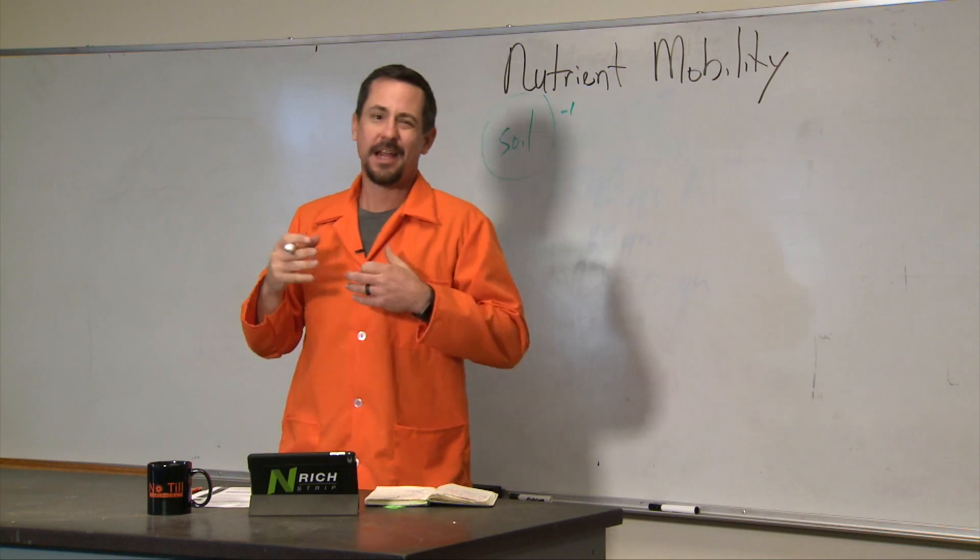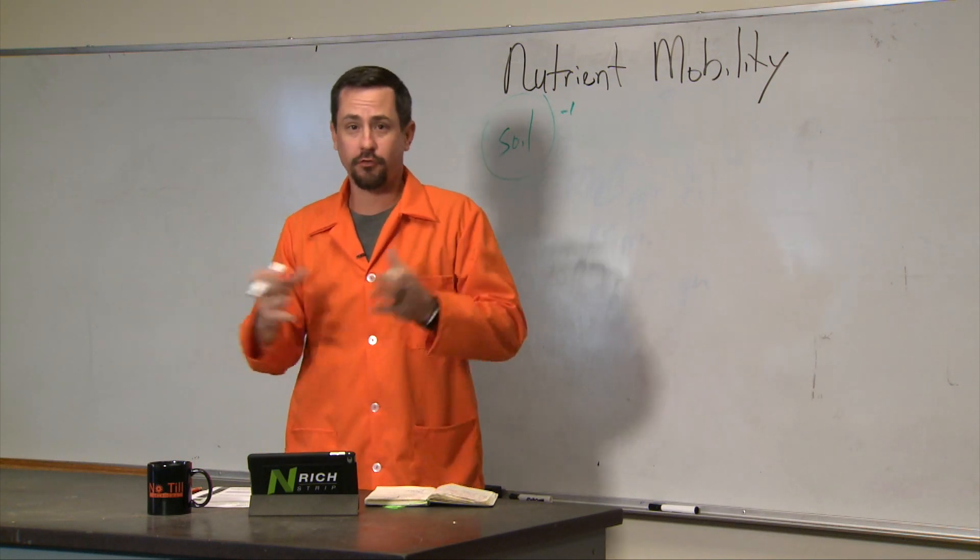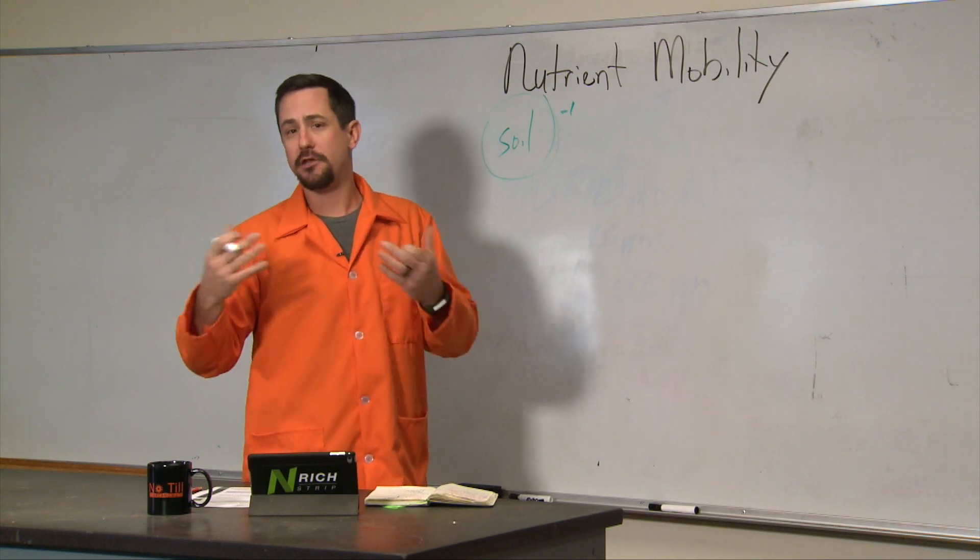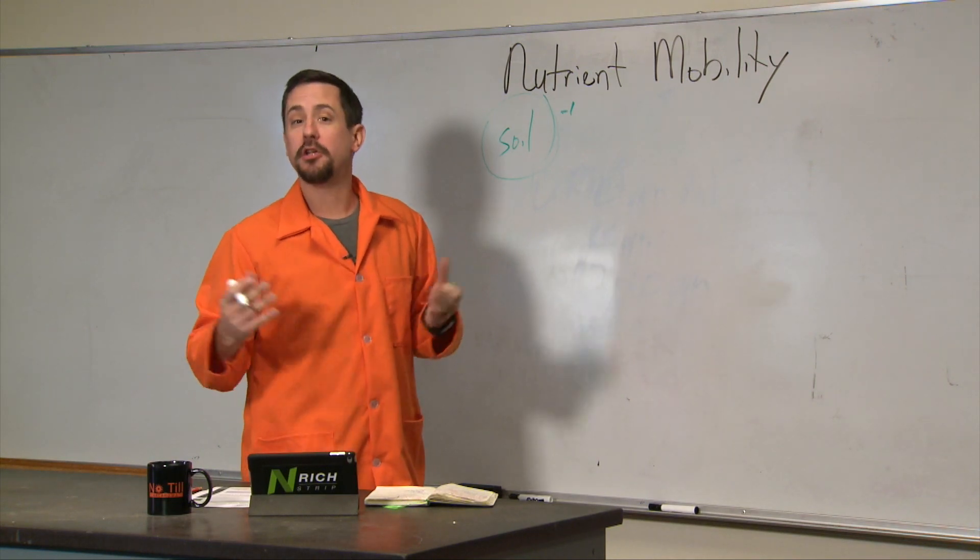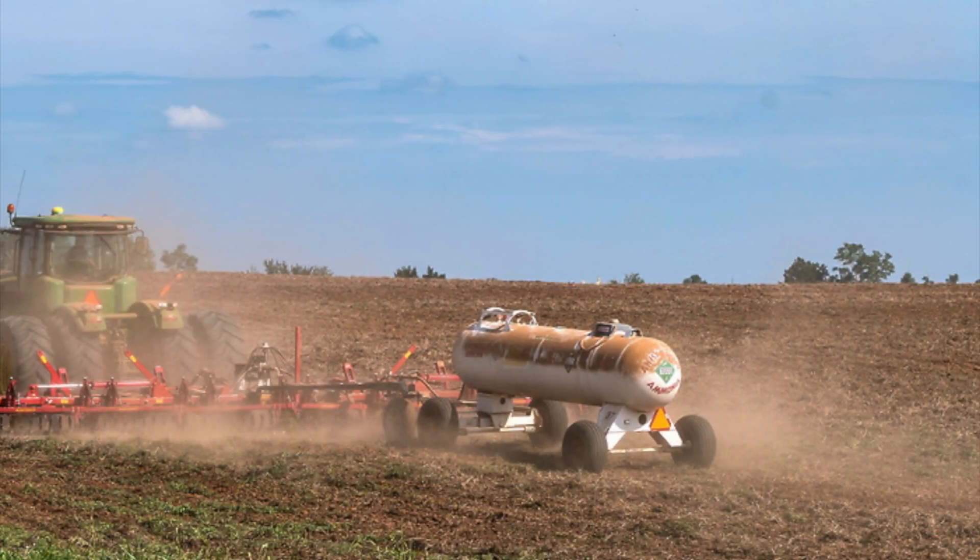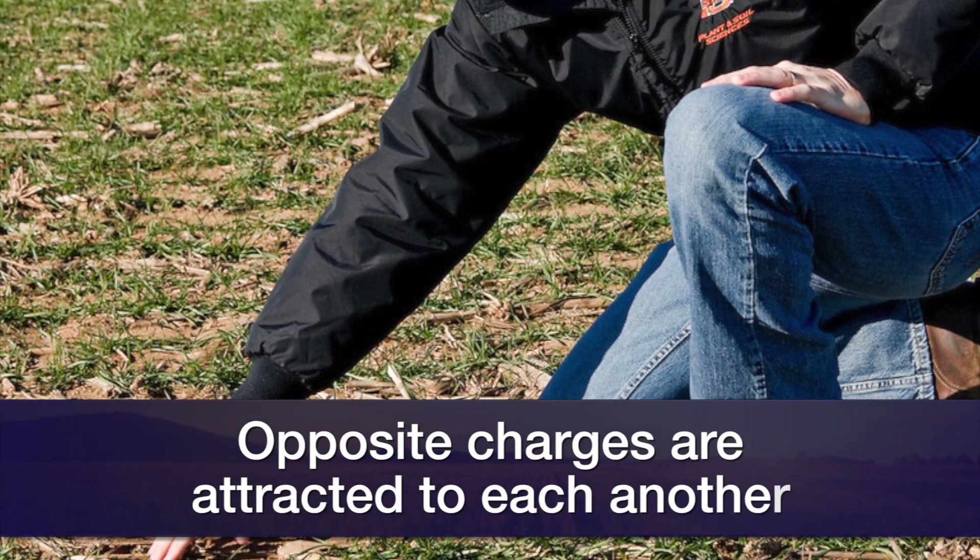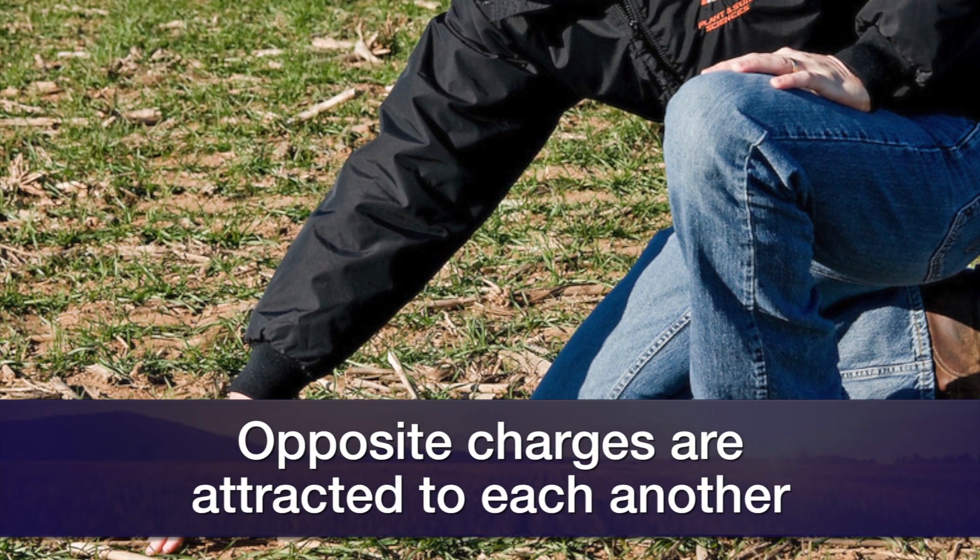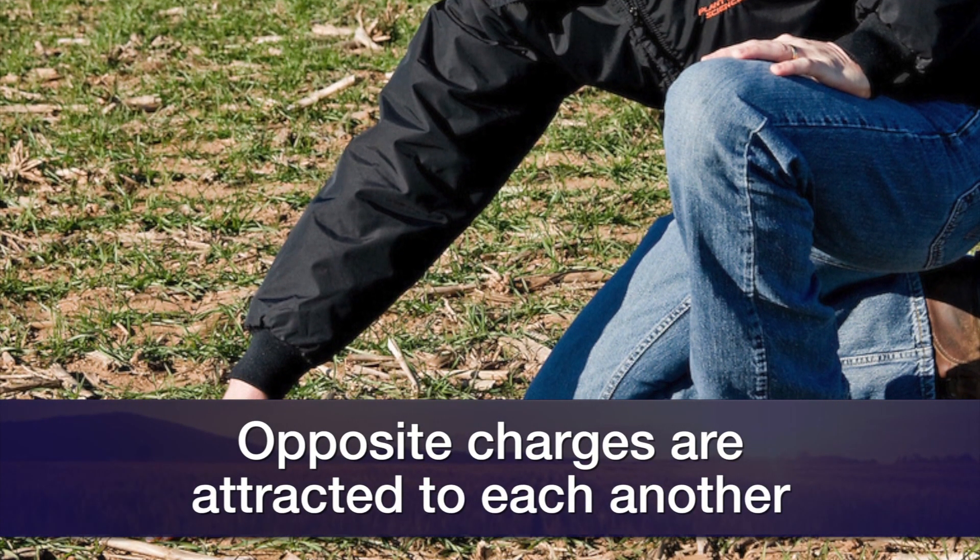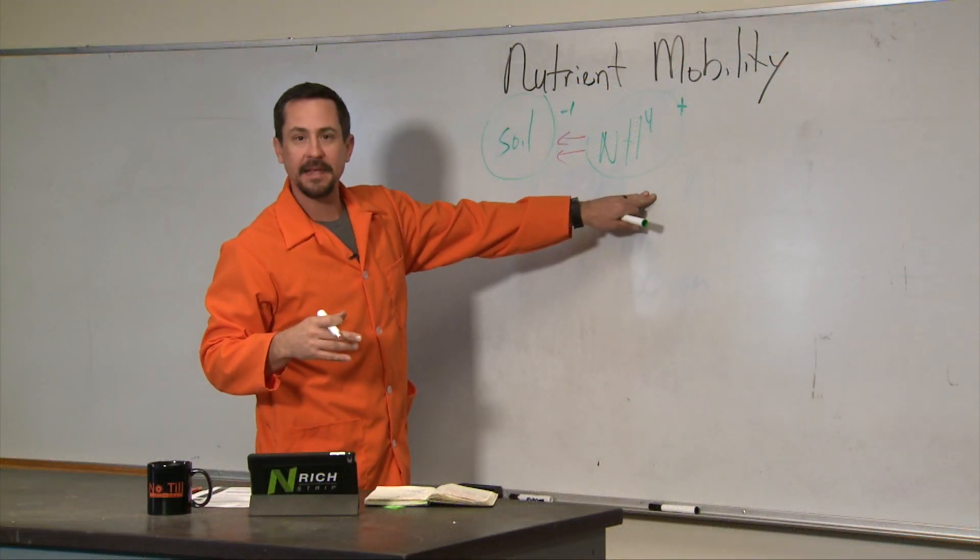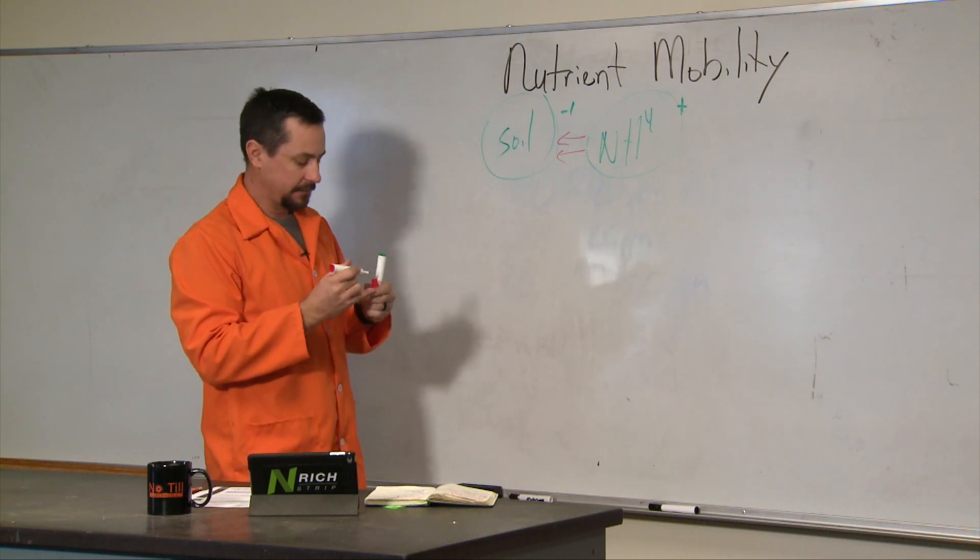As we know, like charges repel, opposite charges attract. So in most cases, we can look at the charge of a nutrient. Let's say ammonium, NH4 positive. We will have this combination where the ammonium wants to sit on the soil particle because it is negative and opposites attract. So this is a positive cation being attracted to the negative soil.